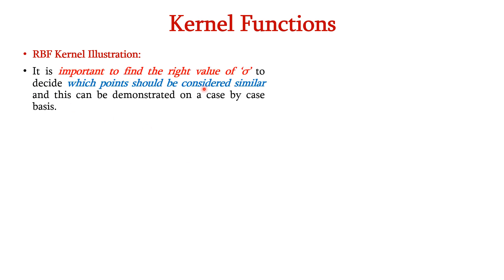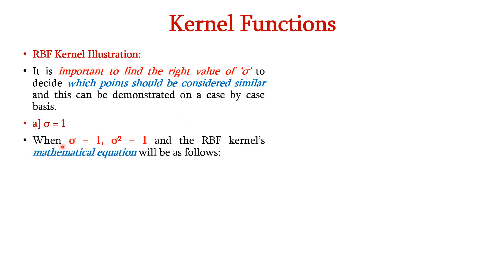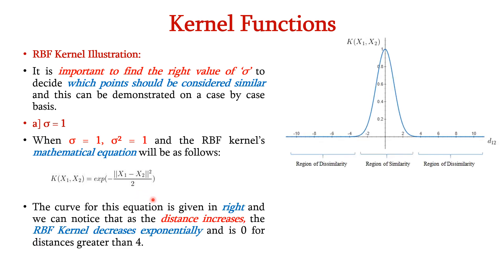Let us see an illustration of the RBF kernel with an example. It is important to find the right value of sigma to decide which points should be considered similar. First, consider sigma equal to 1. When sigma is 1, sigma square is also 1 and the RBF kernel equation becomes K of X1, X2 equal to exponentiation of minus the norm of X1 minus X2 whole square divided by 2. The curve shows that as the distance increases, the RBF kernel exponentially decreases and is approximately 0 for distances greater than 4. So the region of similarity exists up to distance 4, beyond which there is the region of dissimilarity.